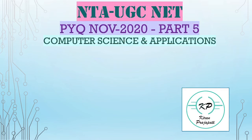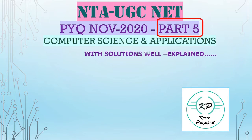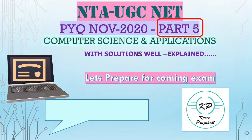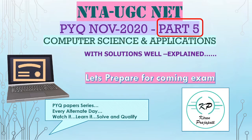Welcome back to my channel. Today I have brought a video on NTA UGC NET November question paper of Computer Science and Application. This is part 5 of the videos — if you have not watched my previous videos, do watch them; I am giving the link of the playlist below. You are going to get solutions of some questions, well explained along with the concepts, so let's prepare for the coming exam together. Every alternate day I bring videos on solutions of UGC NET question papers.